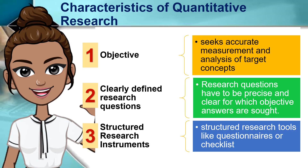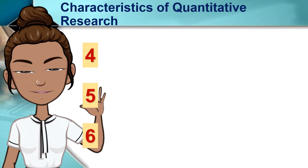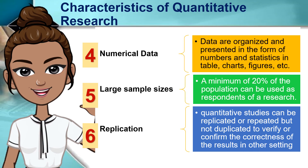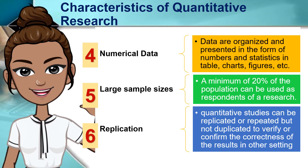Third, structured research instruments: data are normally gathered using structured research tools such as questionnaires to collect measurable characteristics of the population like age, socioeconomic status, number of children, among others. The fourth characteristic of quantitative research is numerical data. Data are in the form of numbers and statistics, often reorganized and presented using tables, charts, graphs, and figures that consolidate large numbers of data to show trends, relationships, or differences among variables.